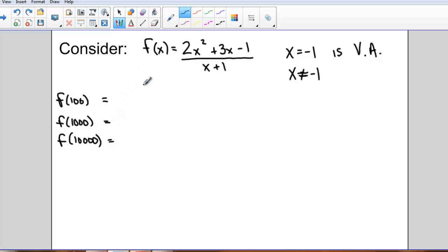So when I sub f at 100 into my function, I get about 200.9. f evaluated at 1,000 is 2,000.9. f evaluated at 10,000, that's 20,000.9. So when I'm subbing in really large positive numbers, this function is not approaching anything. It's just getting larger.